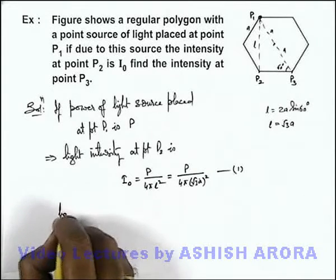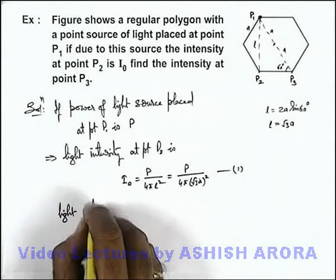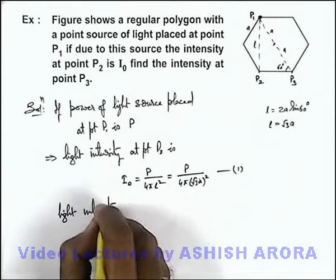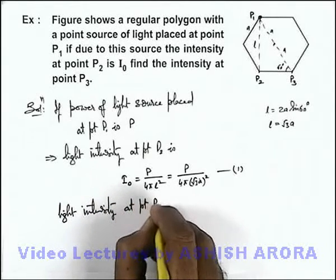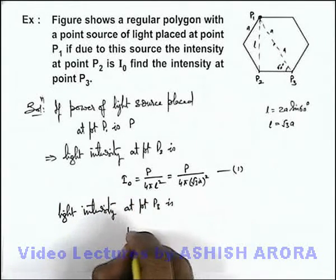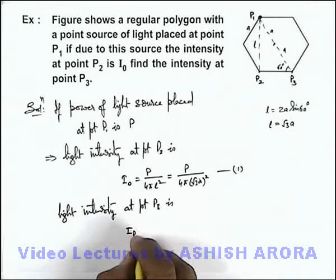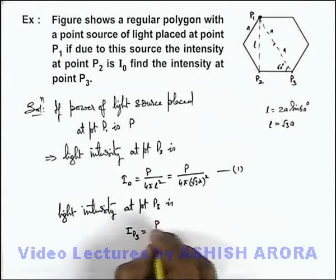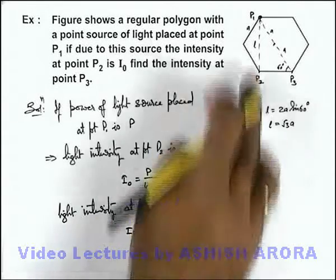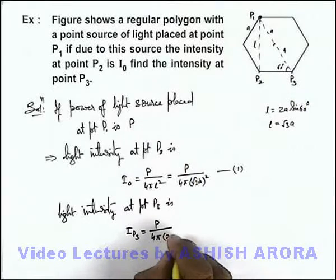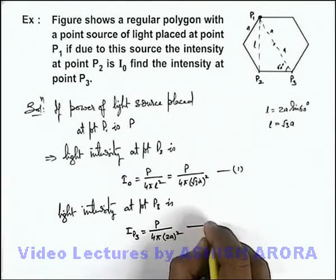Similarly, we can write light intensity at point P3. This is the intensity we are required to calculate, say it is I_P3, then this must be P/(4π) distance squared, that can be taken as 2a. This is our equation 2.